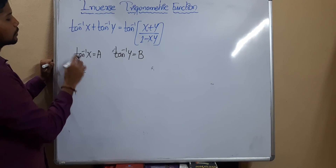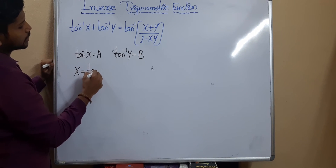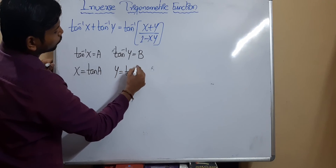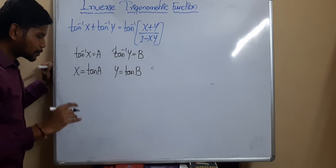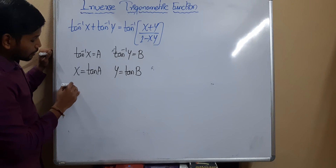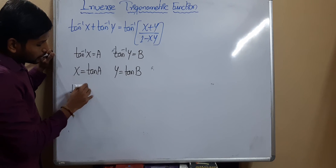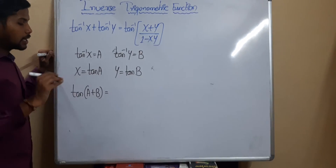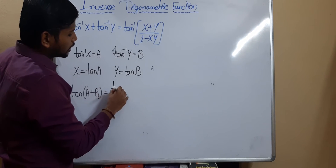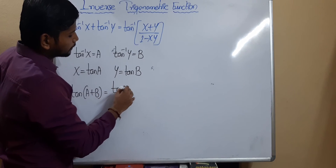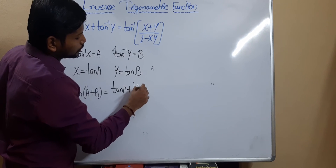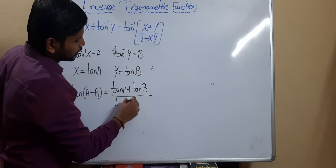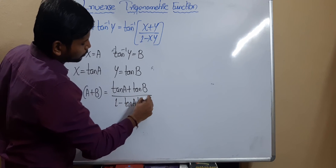Then x = tan a and y = tan b. From trigonometry you learned that tan(a + b) = (tan a + tan b) / (1 − tan a·tan b). We already know this particular formula.